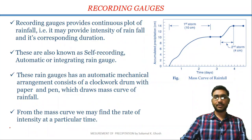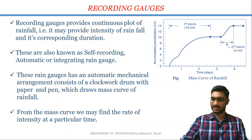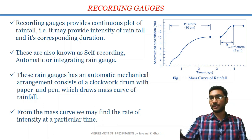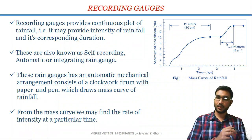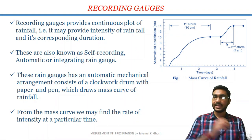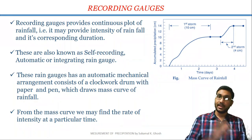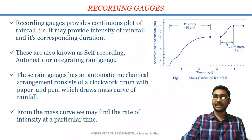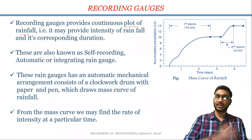Now we are going to discuss about recording gauges. The main disadvantage of non-recording gauges is that they do not produce rainfall data with time. If you want to know rainfall intensity for a particular time in a particular day, you will not be able to get that kind of data from non-recording gauges. But the recording gauges provide a continuous plot of rainfall — a continuous data of rainfall with duration.